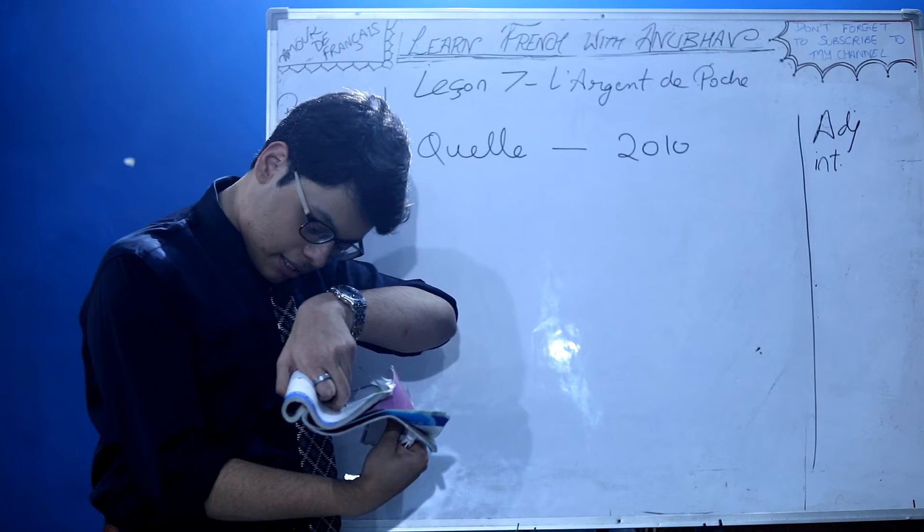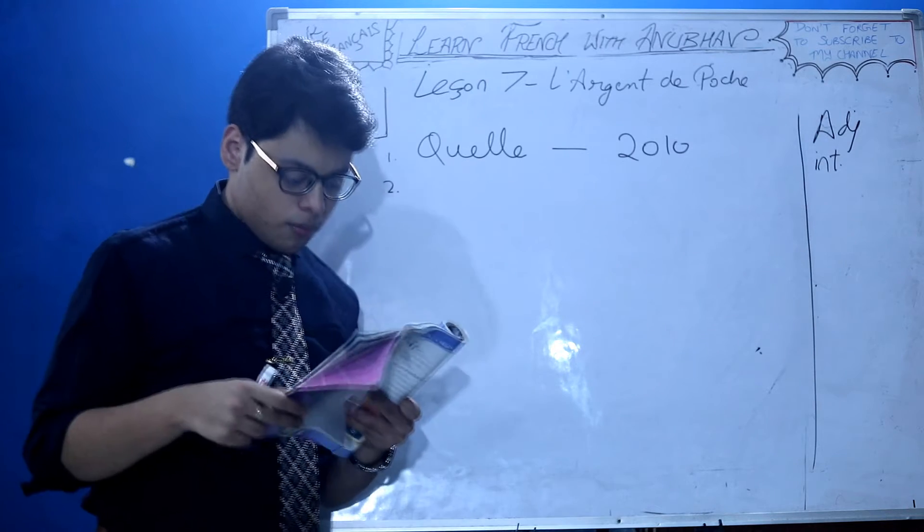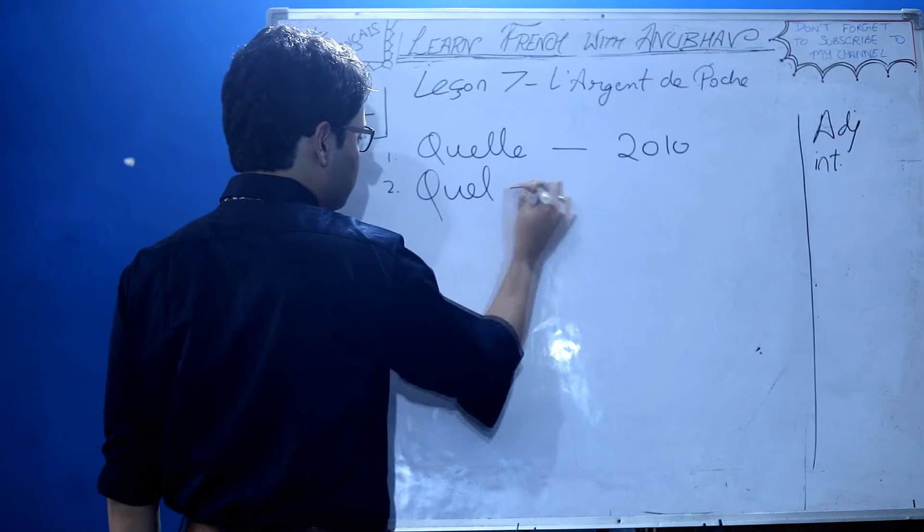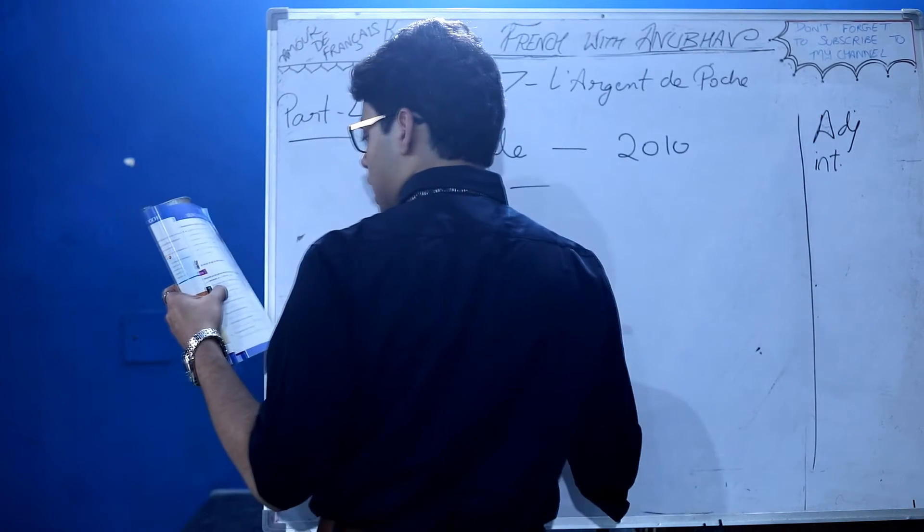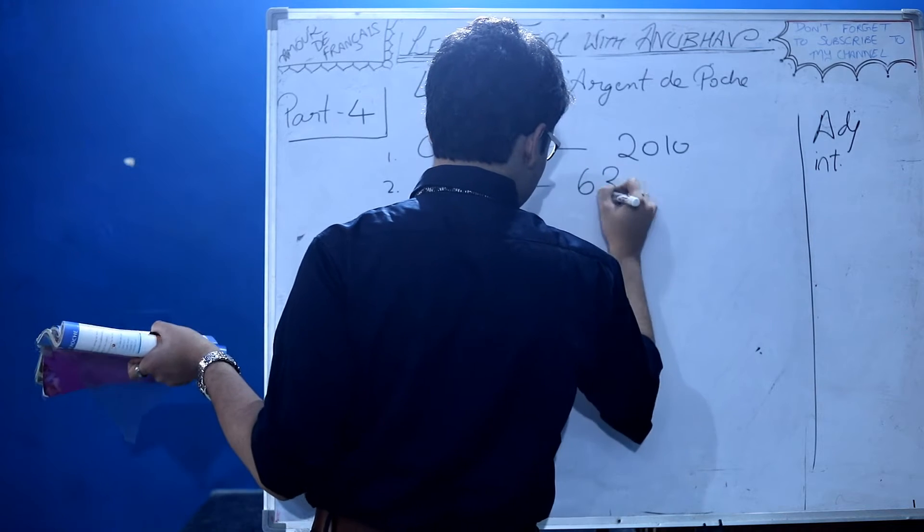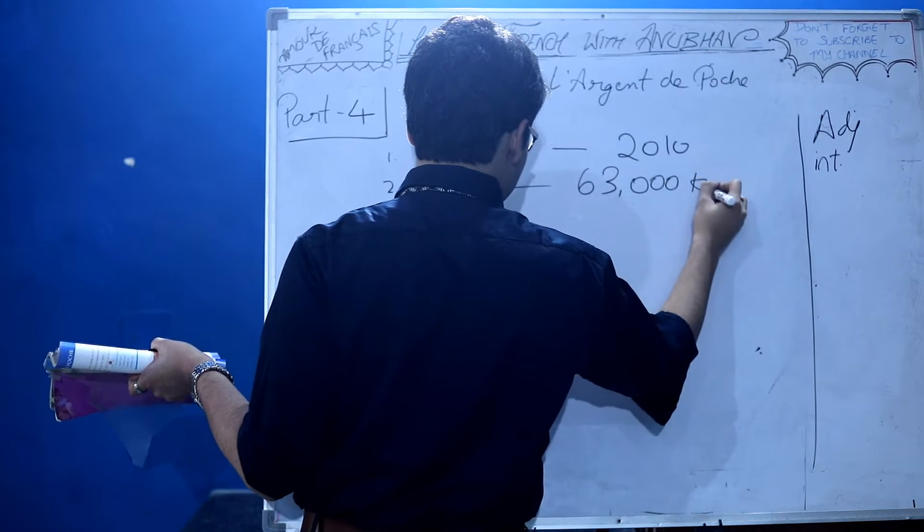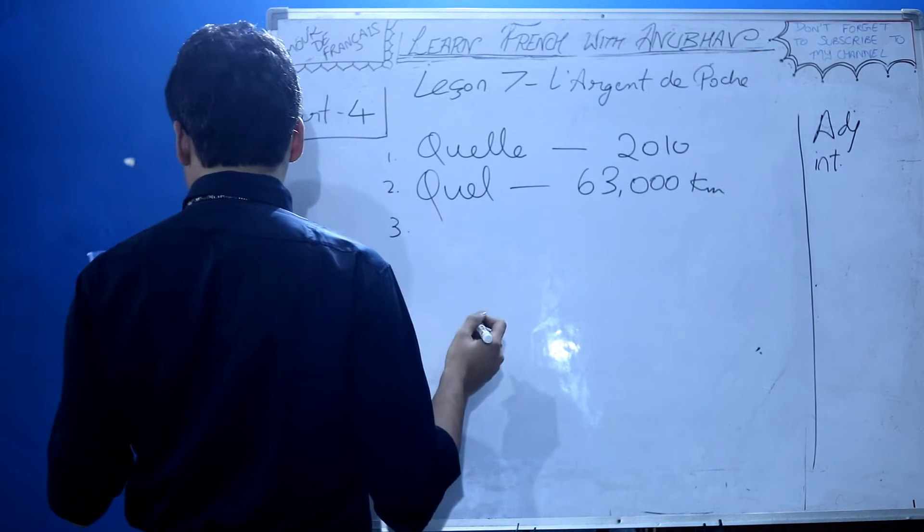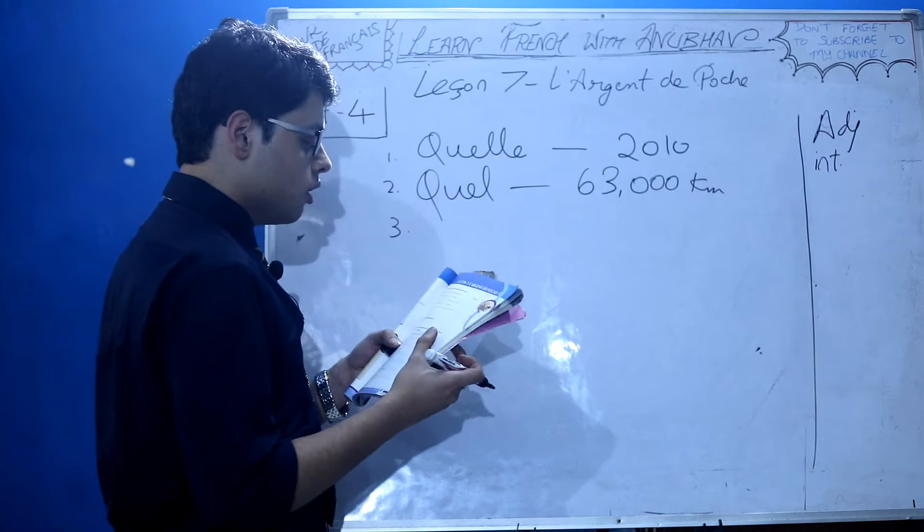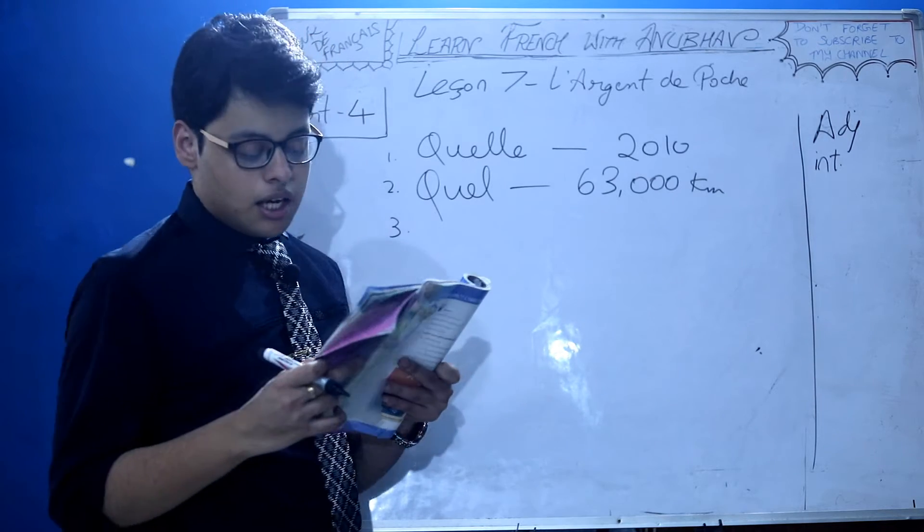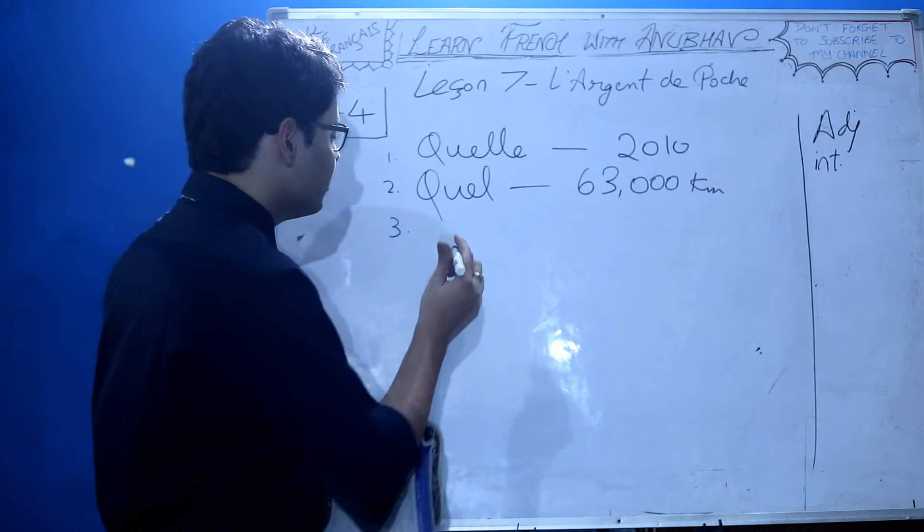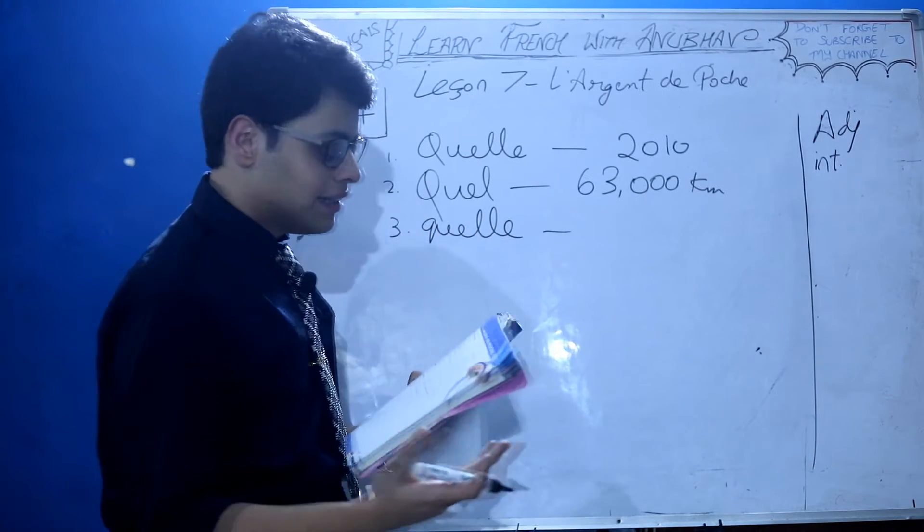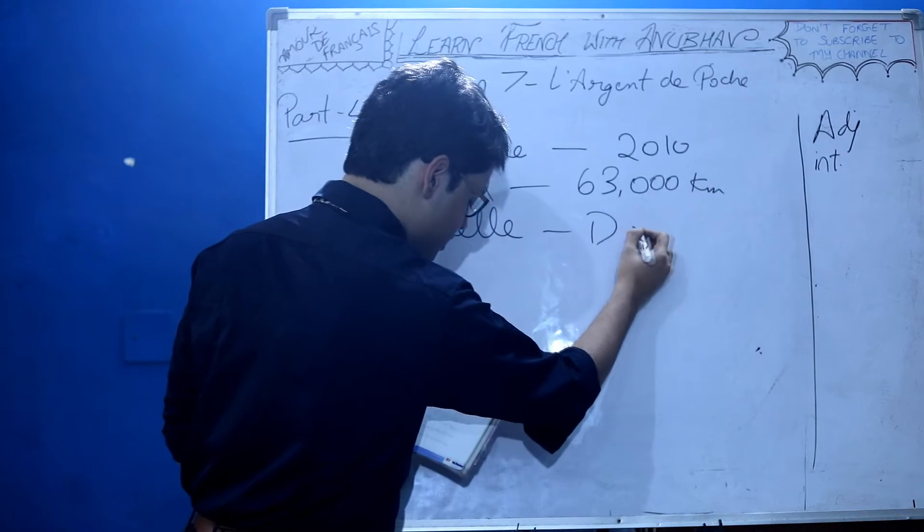Third: Quelle énergie? Énergie is feminine singular, so quelle. The fuel used is diesel. Fourth: Quelle couleur est l'intérieur de cette voiture? Answer: gris.